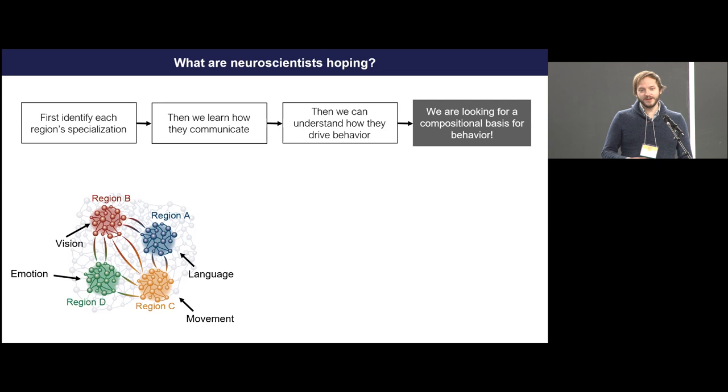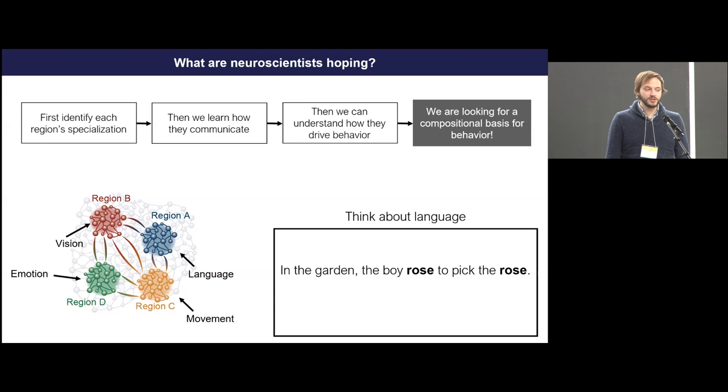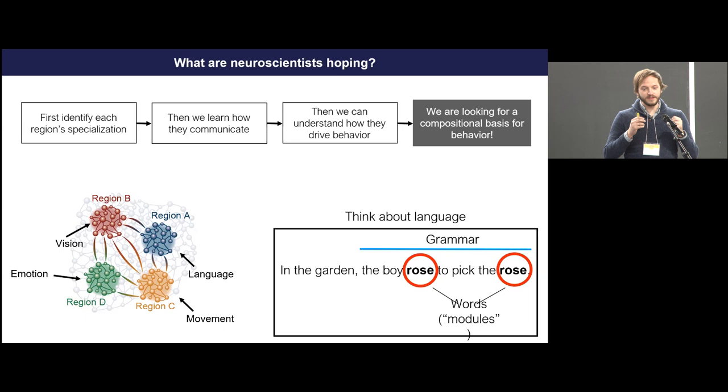And essentially, you could rephrase this as we're kind of really trying to look at these regions as some kind of compositional basis that could explain the types of behavioral flexibility that these organisms are giving. And what I mean by this compositional basis, I'm really drawing a lot on a semantic type of interpretation of this. So think about language. We have the sentence, in the garden, the boy rose to pick the rose. Each of these words maybe is something you're trying to assemble compositionally. But there's this ambiguity, right? So the word rose here means a different thing than the word rose here. One is a flower, one is an action. So you really need this grammatical structure to disambiguate the possible roles of the module rose in this sentence.